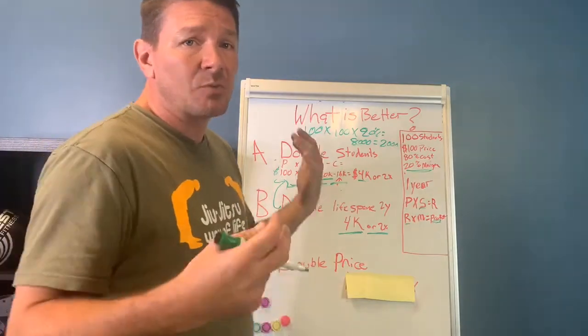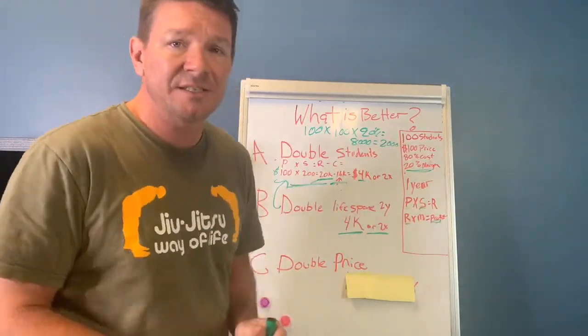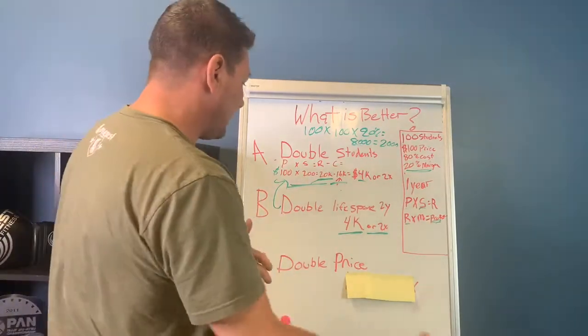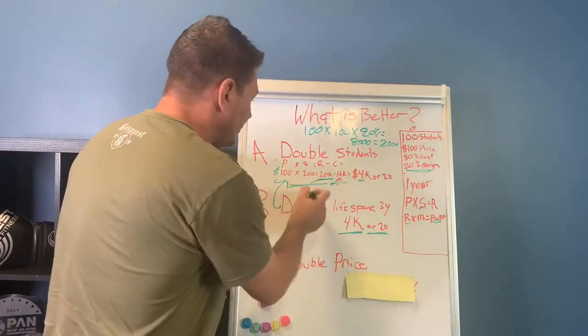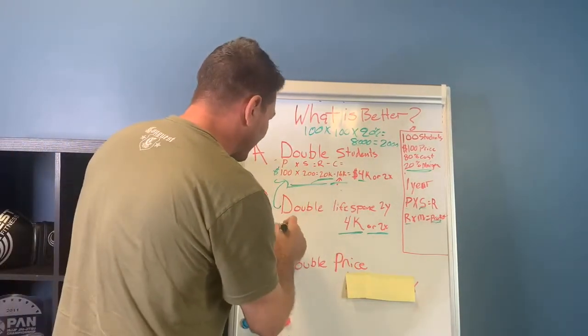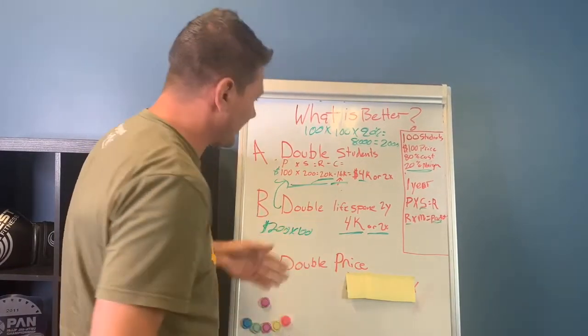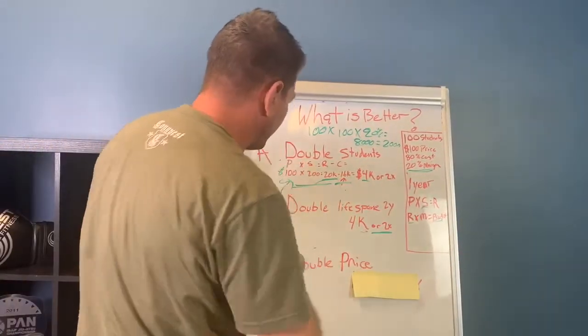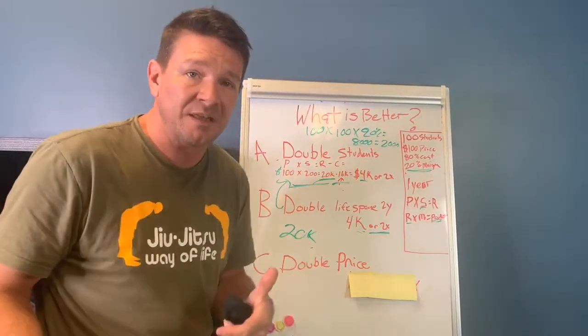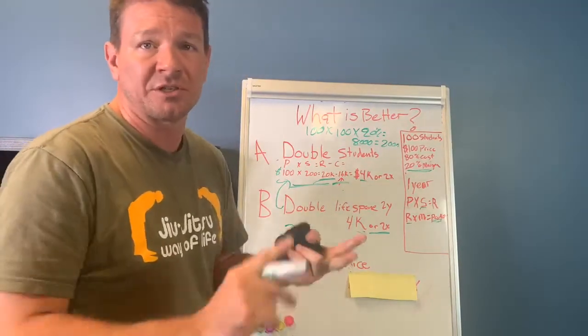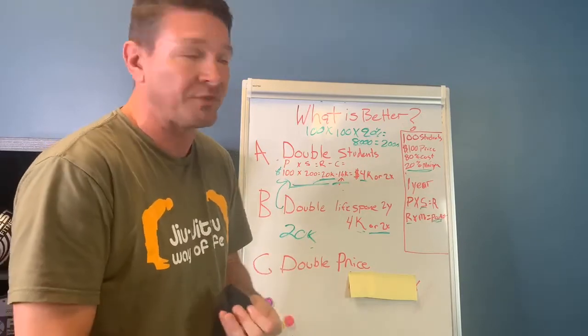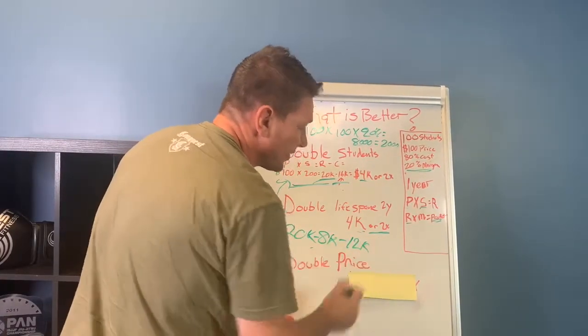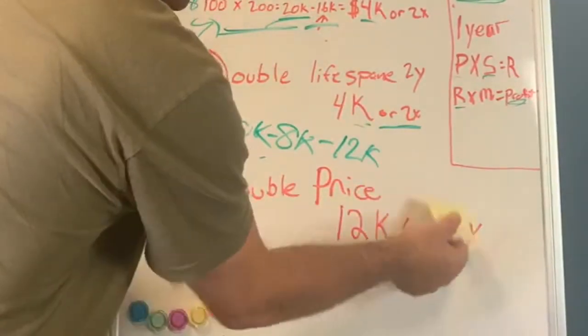Now, price. And this is why I harp so much on price because, again, keeping all of these things the same, you're going to see the power of just raising the price. So if we can double our price, you're going to see the power of that, right? So let's just do this right here. So really this formula is going to stay the same. We got $200 times the 100, right? So $200 times the 100 students that we typically would have based on these same numbers. And now what we've done is we've made that $20,000, but our costs have not increased. We didn't have to get more instructors. We didn't have to get more classes. We didn't have to get more insurance for these people. So really our $8,000 is still going to be our cost.